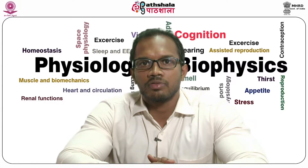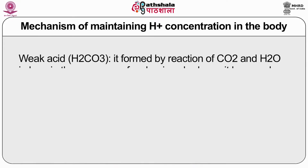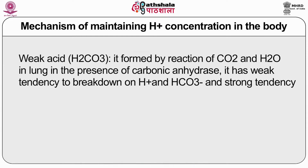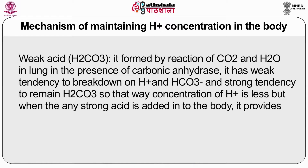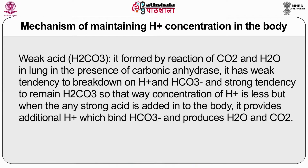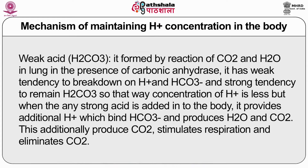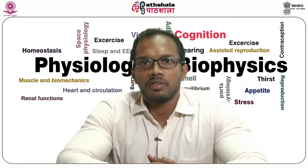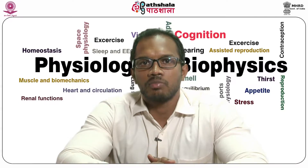The body fluid buffer system includes the weak acid H2CO3, which is formed by the reaction of CO2 and H2O in the lung in the presence of carbonic anhydrase. It has a weak tendency to break down into H+ and bicarbonate and a strong tendency to maintain H2CO3. When any strong acid is added to the body, it provides additional H+ ions which bind HCO3, producing H2O and CO2. This additionally produced CO2 stimulates respiration and eliminates CO2. This is the most powerful extracellular buffer system in the body.